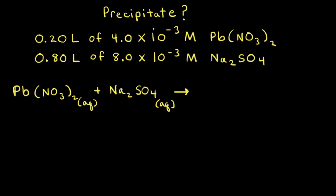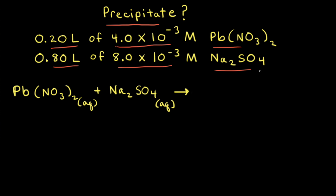For this problem, our goal is to figure out whether or not a precipitate will form if we mix 0.20 liters of a 4.0 times 10 to the negative third molar solution of lead two nitrate with 0.80 liters of an 8.0 times 10 to the negative third molar solution of sodium sulfate.